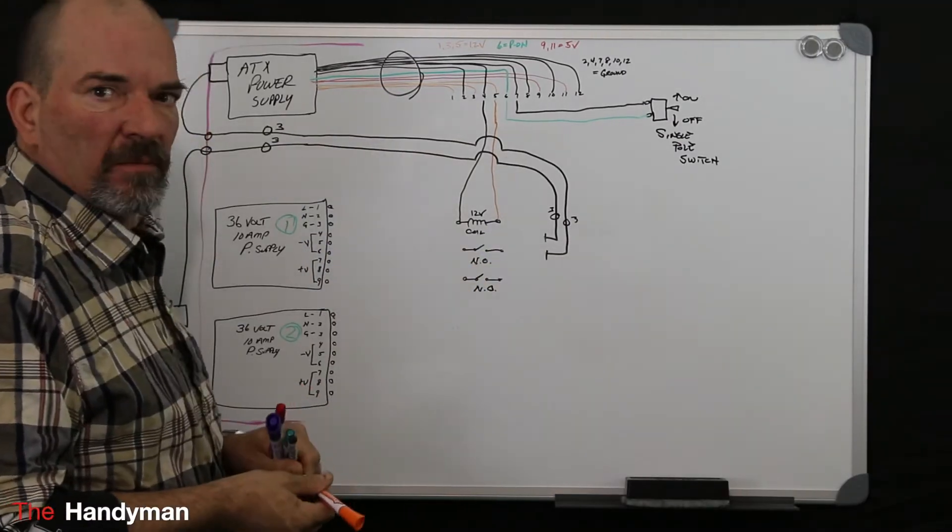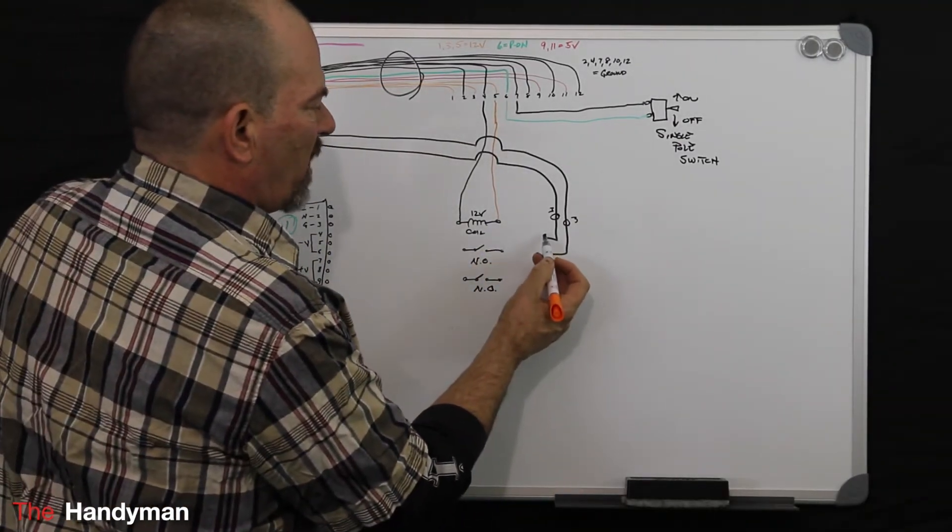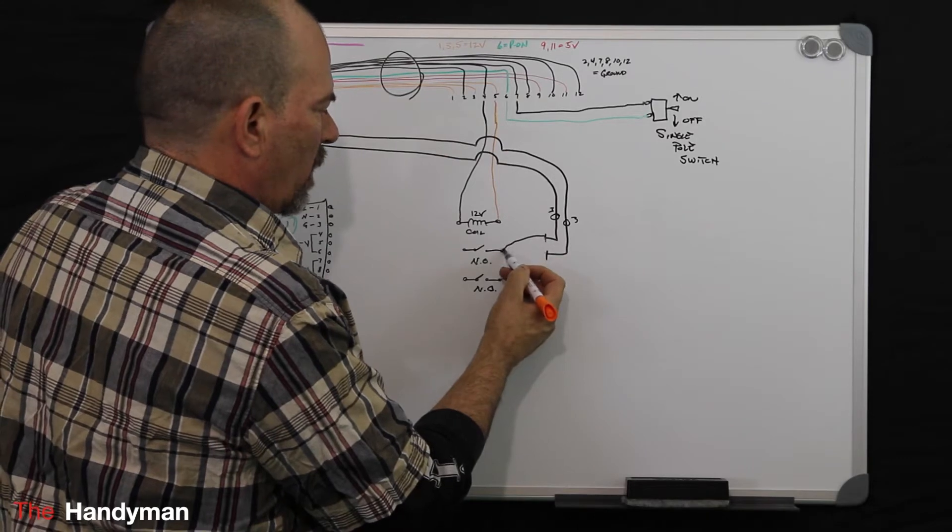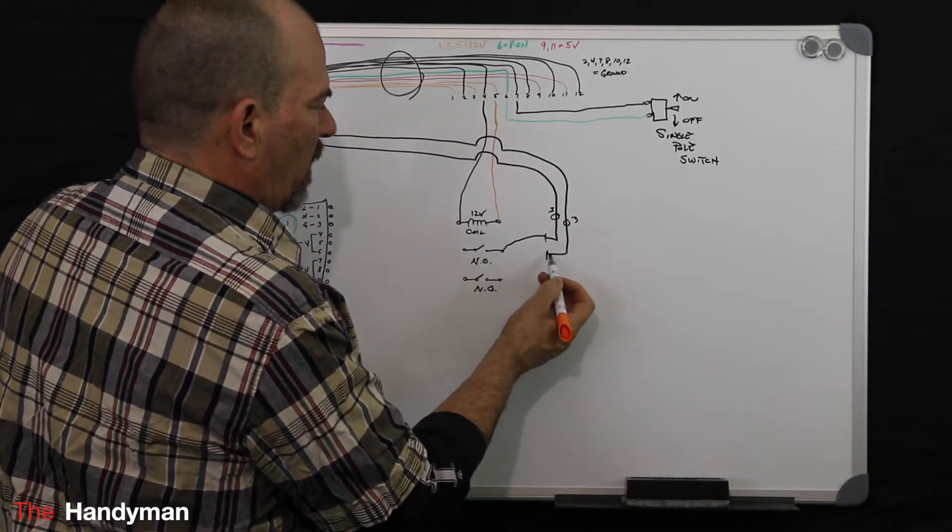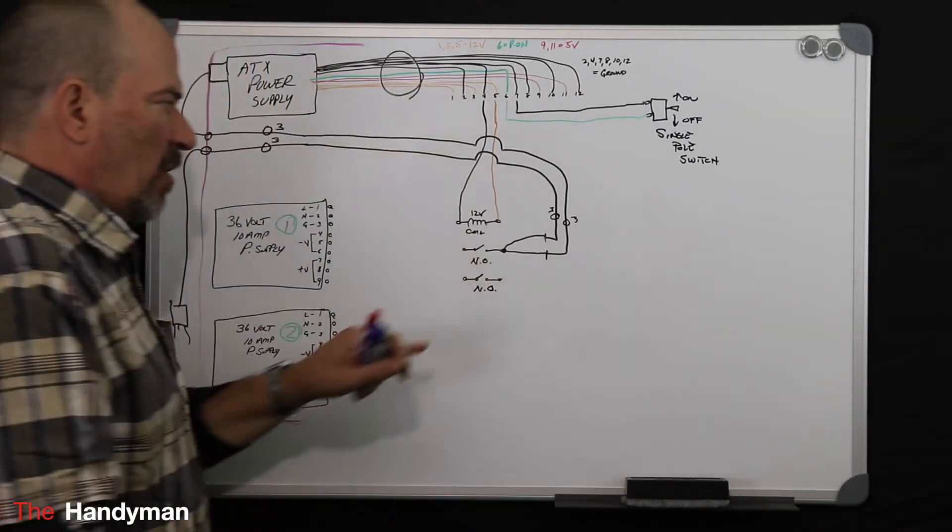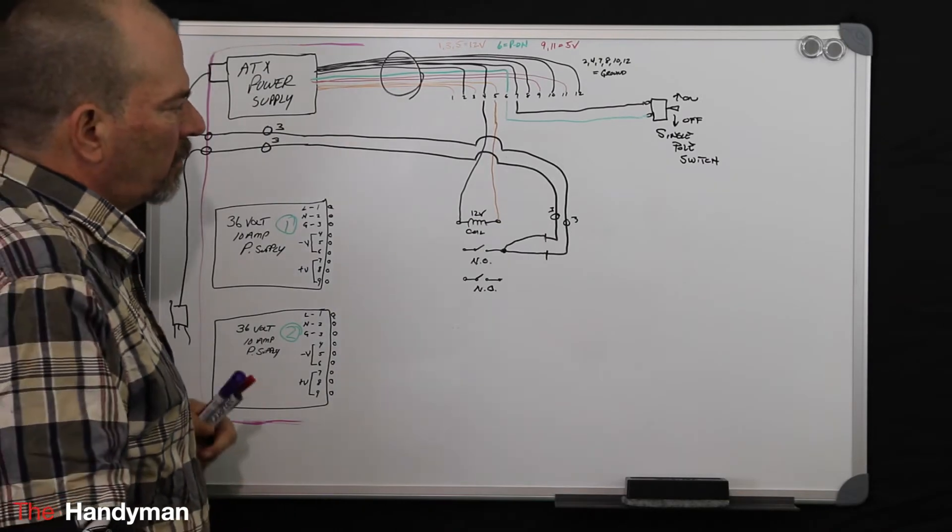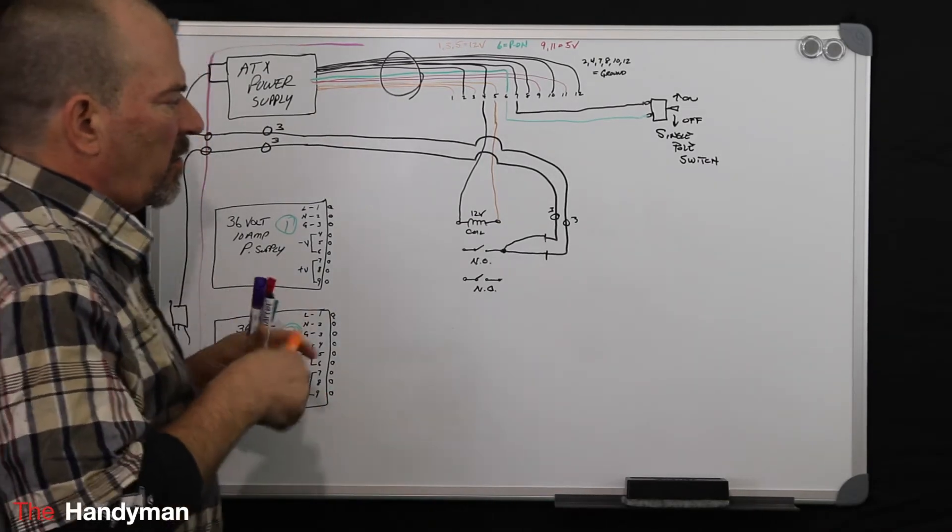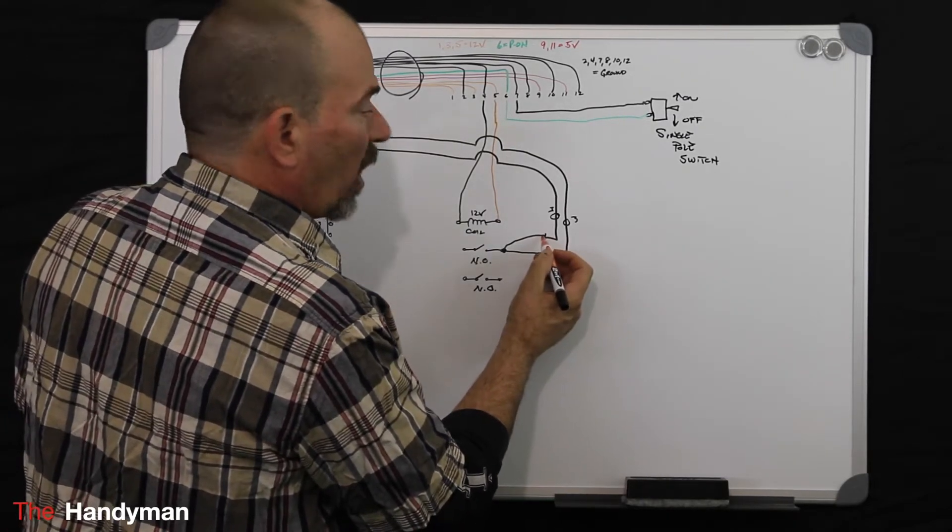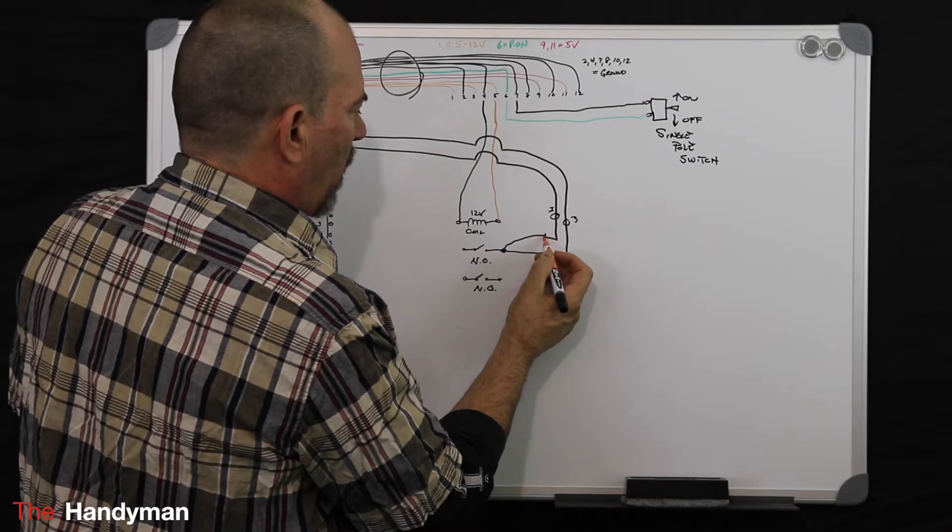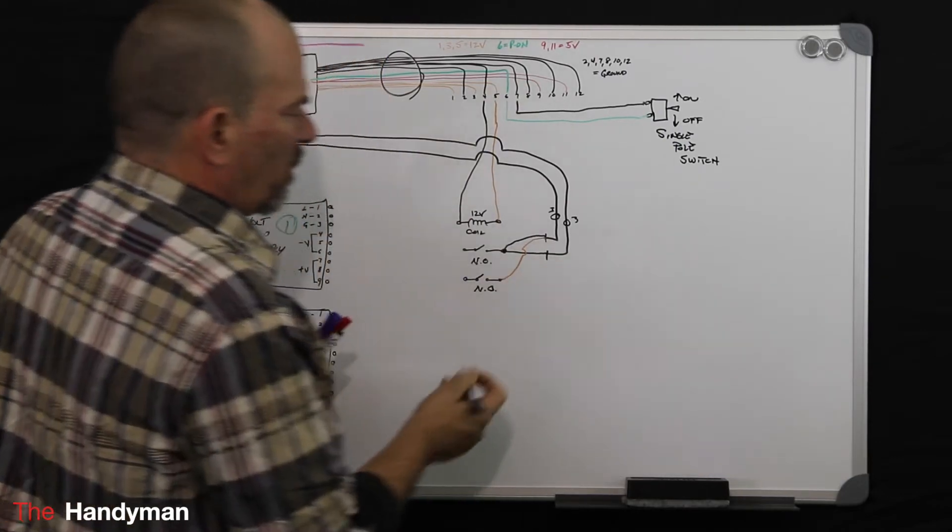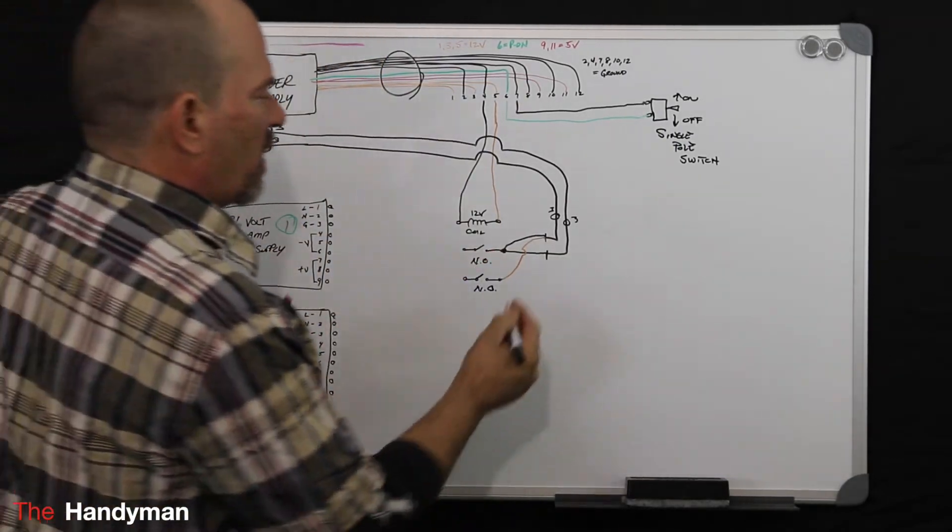So then what you're going to do is take your black wires out of each one of these cables, which is your hot, and you're going to run them in parallel to one side of your normally open contacts. Then in these cables you're going to have your neutrals, which we're going to represent with orange because I don't have white to write on white. You take your neutral out of each cable and you'll run that to another set of normally open contacts.